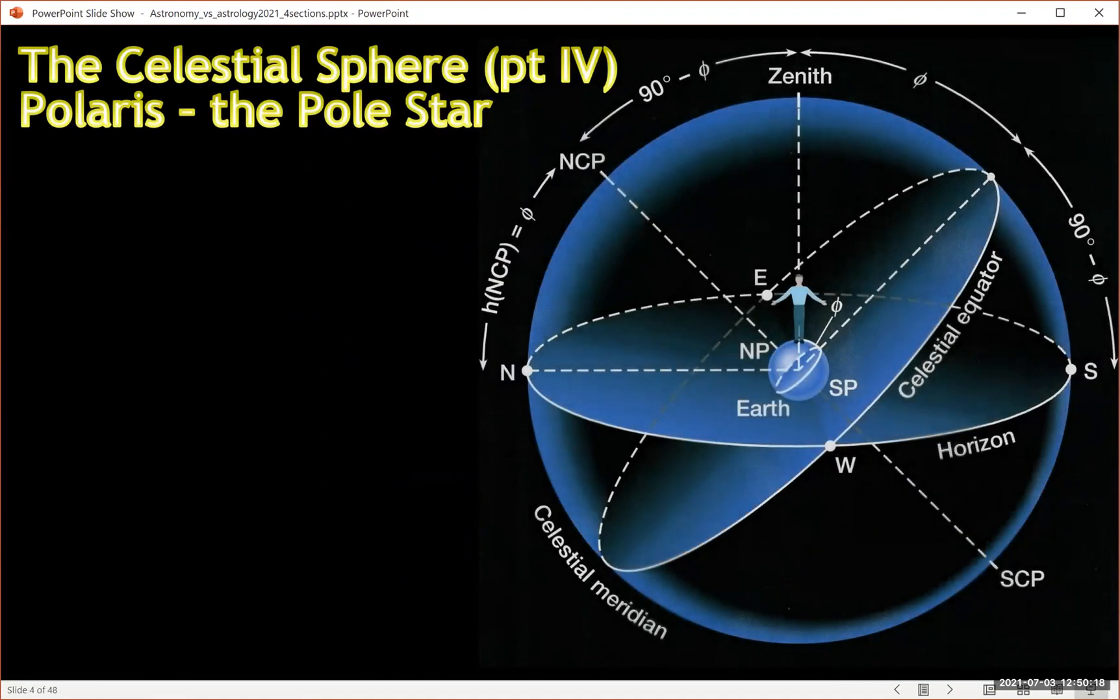Now there's a few interesting things about the celestial sphere. So here we have again the earth. We have someone standing at 45 degrees north, not to scale. And for this person standing right here, the zenith is directly above their head. This here is their horizon. They cannot see anything below the horizon. Here's the celestial equator, and here's the North Pole. So the North Celestial Pole is here.